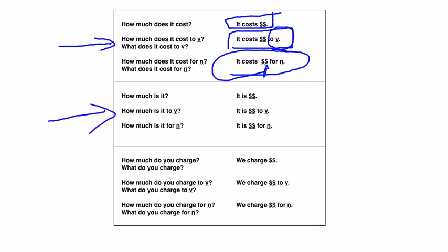The next variation here is, how much is it, is very simple. With the verb, how much is it to take the bus? It is $10 to take the bus. Once again, try to make the student complete the full sentence, rather than a simple $10 answer.